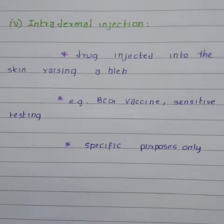Intradermal injection involves injecting the drug into the skin, raising a bleb. An example is the BCG vaccine and sensitivity testing. Intradermal injection is given rarely and only for specific purposes, and it must be performed very carefully.